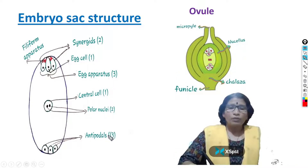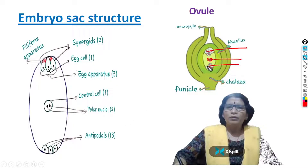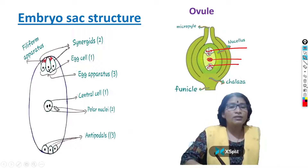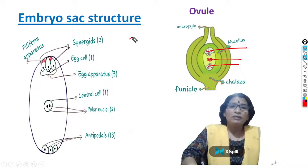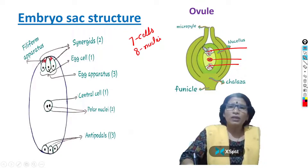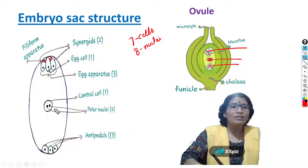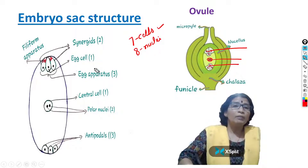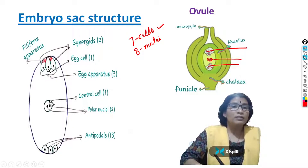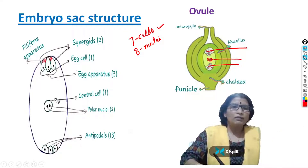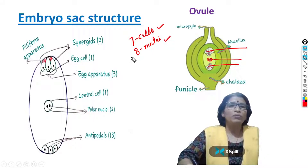The antipodals are three cells located towards the chalaza region. The central cell is a single cell that contains two polar nuclei. Finally, the embryo sac has seven cells and eight nuclei. Three cells are located towards the micropyle region and three cells towards the chalaza region — that makes six — plus one central cell equals seven cells. Each cell has one nucleus, but the central cell has two nuclei, giving a total of eight nuclei. This is a special characteristic feature of the embryo sac.